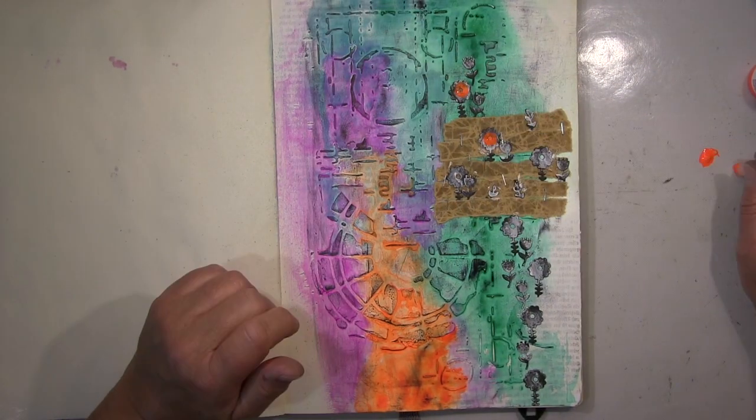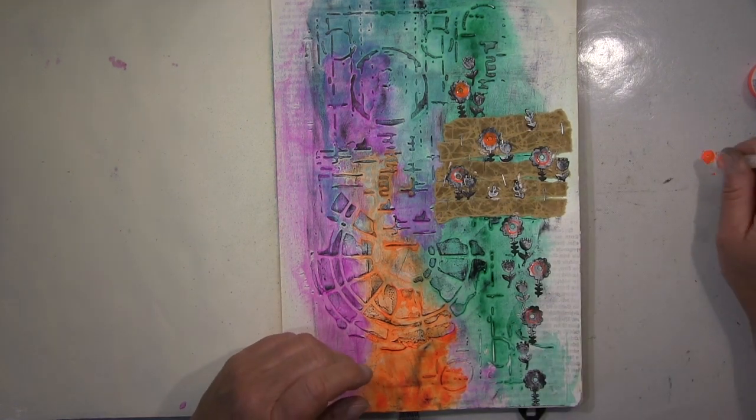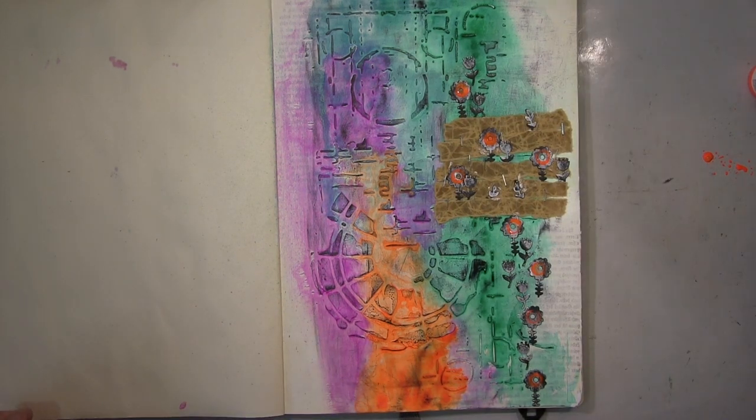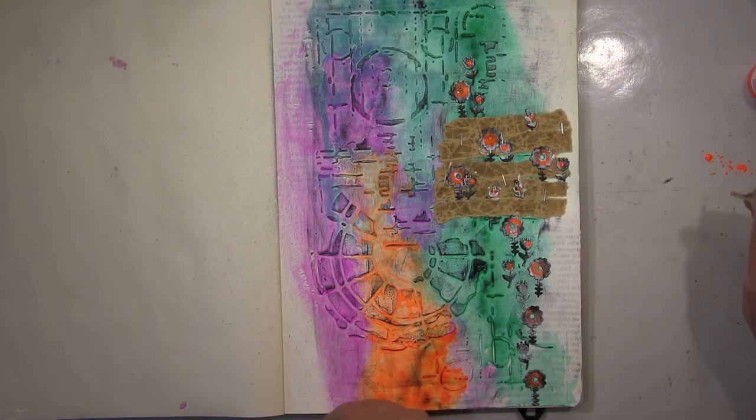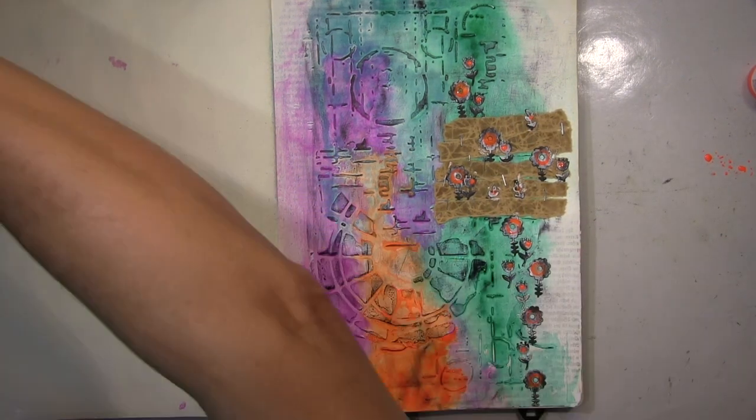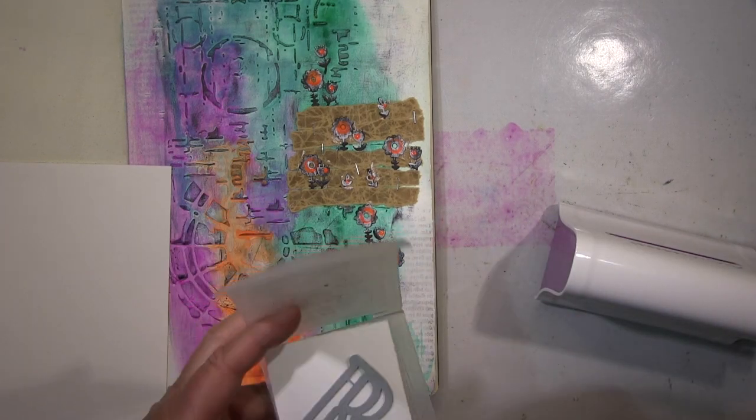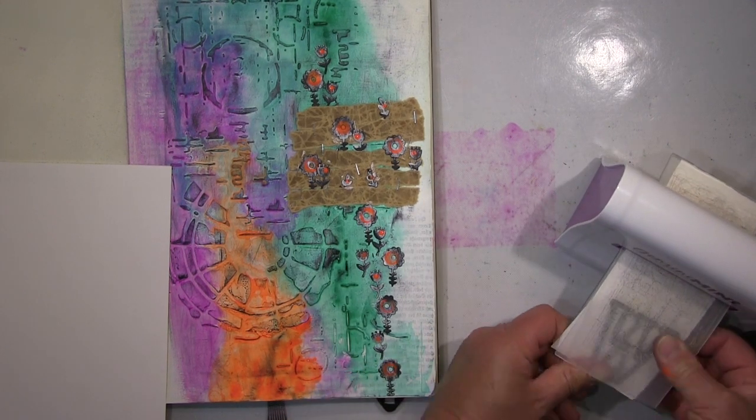Ich pack jetzt noch ein bisschen Gesso auf meine Blumen, weil ich da auch noch das Orange wieder aufnehmen möchte und einfach so ein kleines bisschen Orange noch mit drauf packe. You know, I put some gesso here on my flowers just as a base for my orange. I'm picking up the orange here and put it on. I think that brings it all so much better together and some dots here with it, just with the stick and that's it.